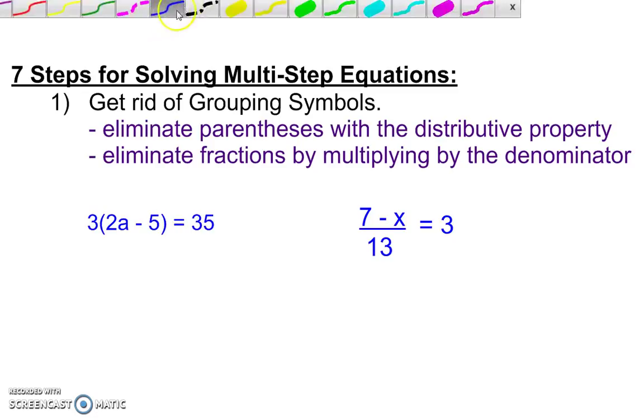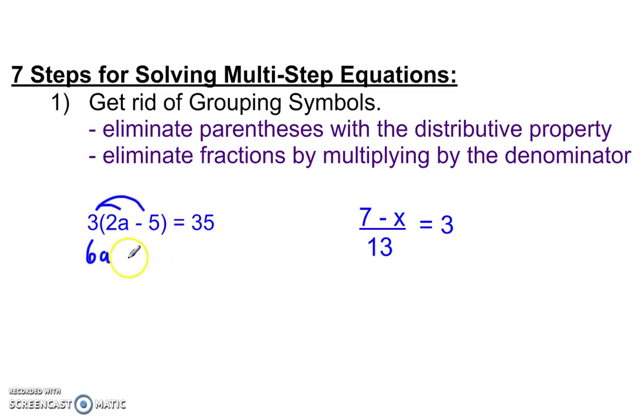Here's a couple examples. Distributive property, 3 times 2a gives me 6a. 3 times negative 5 gives me negative 15, is equal to 35. That would be the first step here.